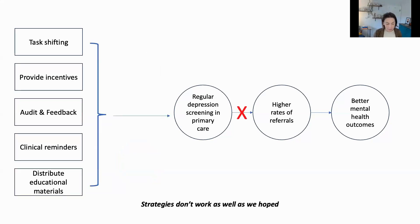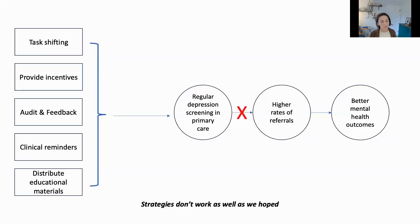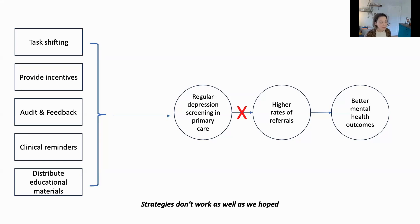Even when our strategies are aligned with the barriers we are trying to address, they often don't work as well as we hope. We might see that our strategies have a weaker impact than expected. Oftentimes, this is due to characteristics of the context that impact when and how well our implementation strategies work.